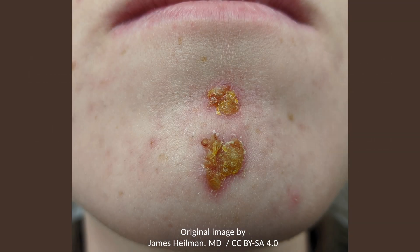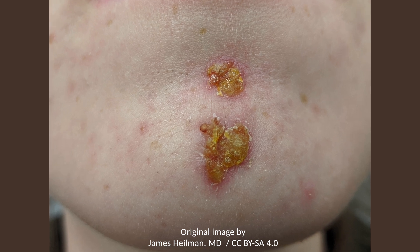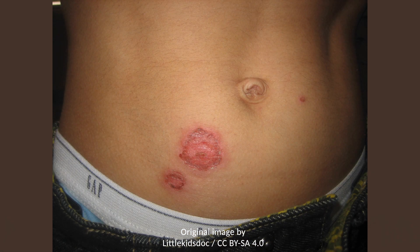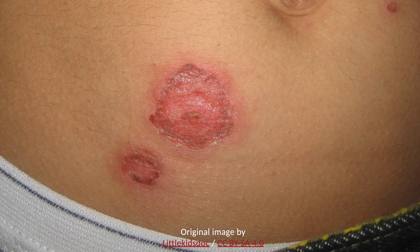Impetigo is characterized by erythematous lesions that are covered with a honey-colored crust. The lesions are usually asymptomatic, but they can cause itchiness. The lesions begin as macules and papules, but then quickly fill with fluid and rupture. A distinction is made between the three types of impetigo.